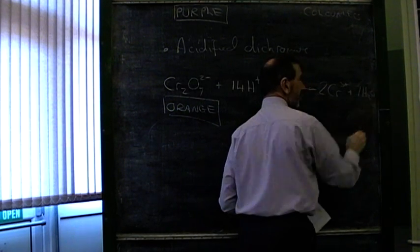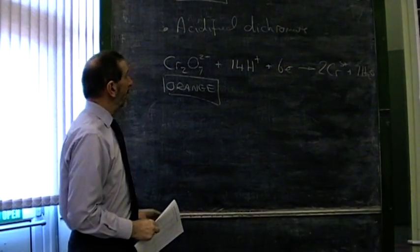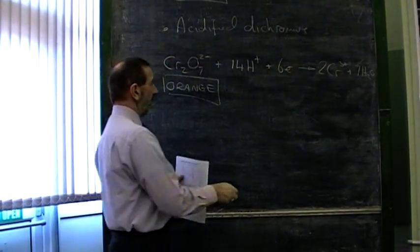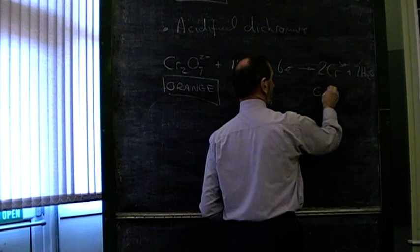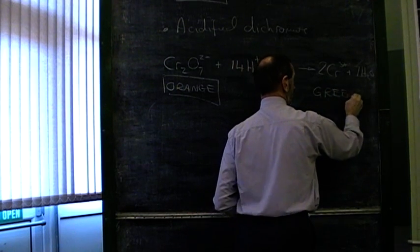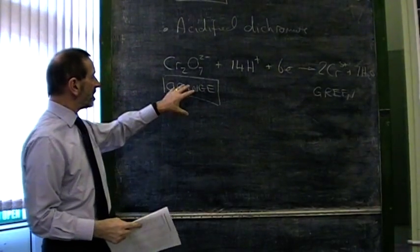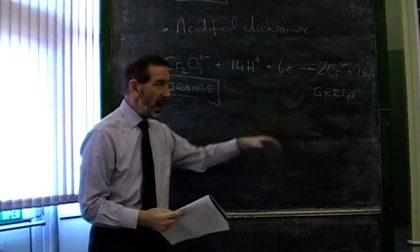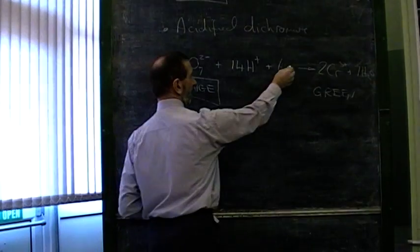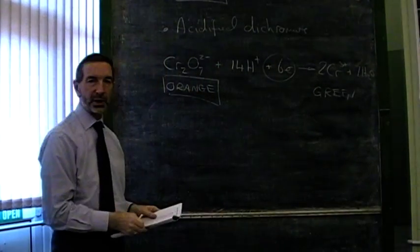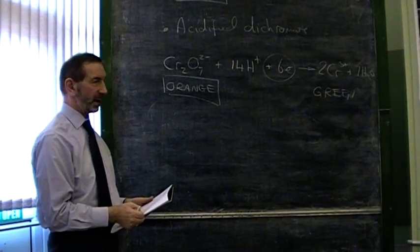So, is there a colour change this time? Yes there is. But it's not purple to colourless, it's orange to green. You have to remember these colour changes. If you see this orange colour turning green, it must be that this has gained electrons, and this can only gain electrons if something else has lost them, if something else has been oxidised.